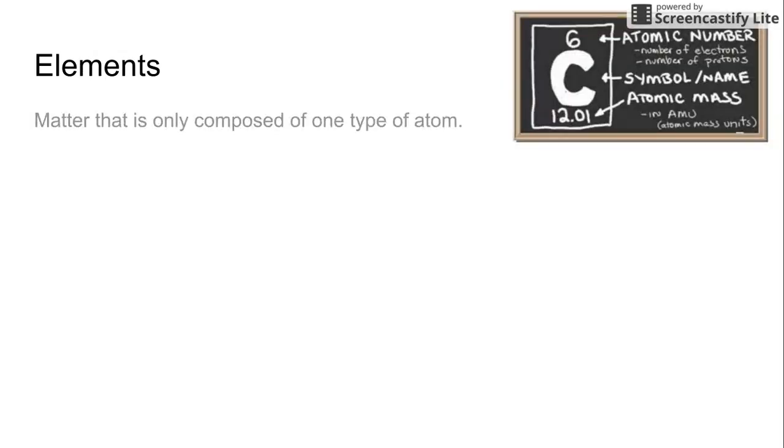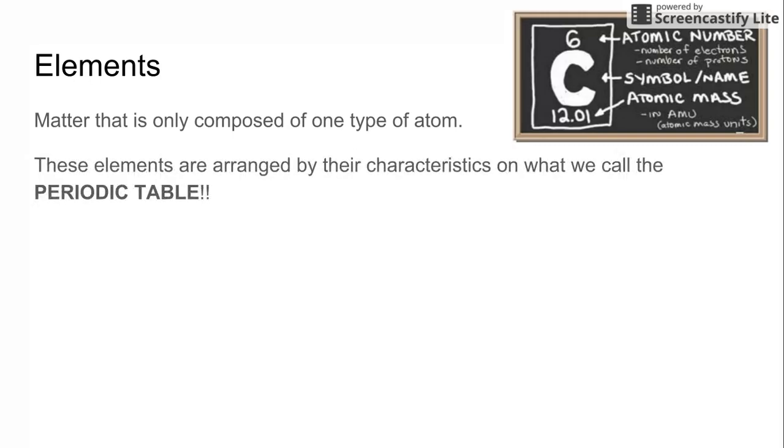So when we talk about the elements, first we talk about something called matter. And matter is everything that surrounds you. And it's only composed of one type of atom. Anything that's considered an element is only composed of one type of atom. It's either all carbon, all nitrogen, all helium. The elements are arranged by characteristics on what we call the periodic table, which all of you have in your placemat form.